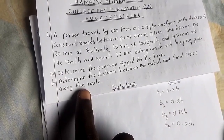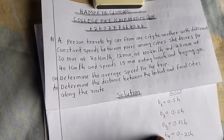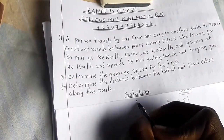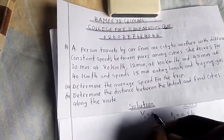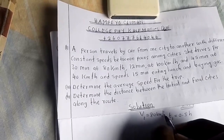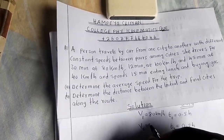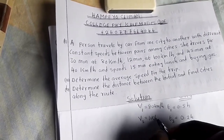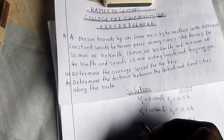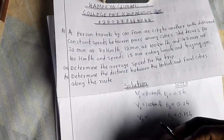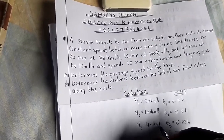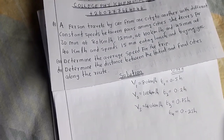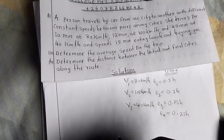Before we proceed, we can note our velocities: velocity one is 80 kilometers per hour, velocity two is 100 kilometers per hour, and velocity three is 40 kilometers per hour.